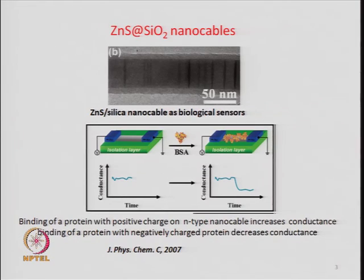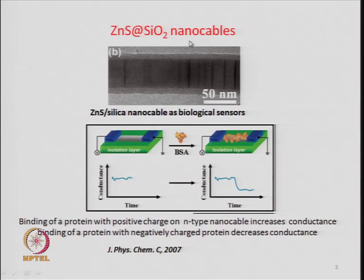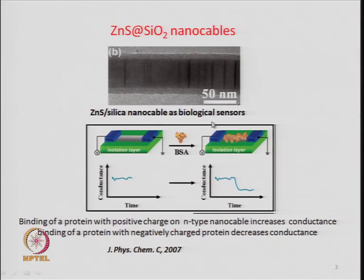The first example is a zinc sulfide core with a shell of silica. The core-shell structure is not spherical but is in the form of a thick wire — we can call them nano cables. The dark part inside is the core material, zinc sulfide, and on top of that you have silica. This combination of zinc sulfide and silica core-shell nanostructures can be used as sensors for detecting particular biological molecules.